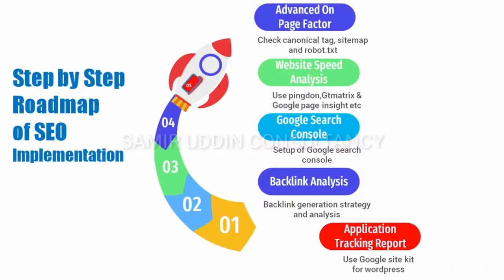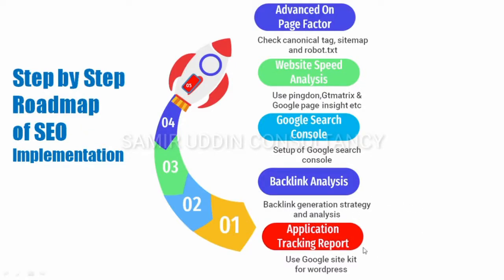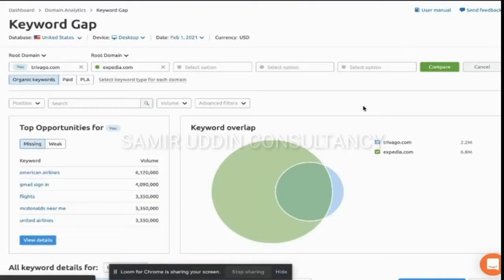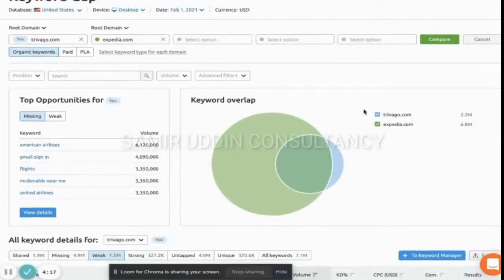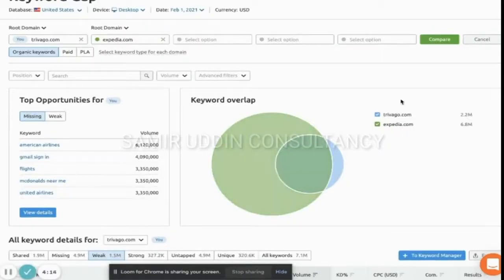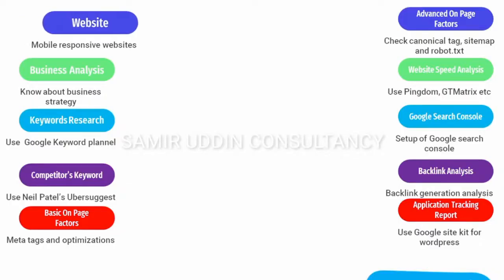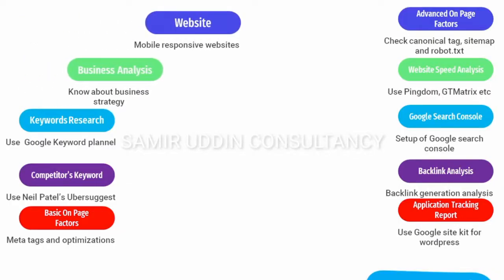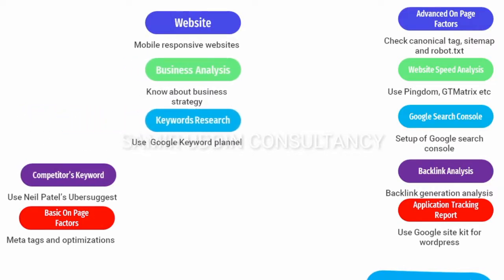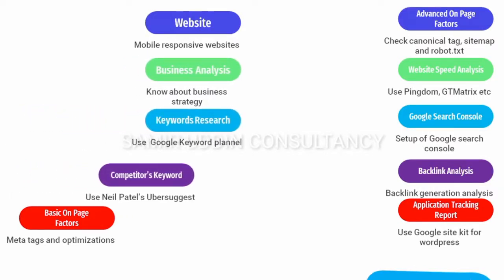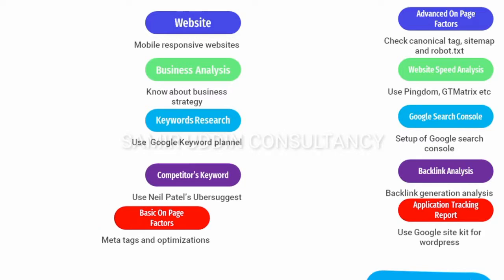After implementing all these steps, we need to track our search engine strategy through Google Search Console or ACRP. If you are using WordPress CMS, then you can use the Google Site Kit plugin for tracking your application. After tracking, you will find your keyword ranking and any mistakes as well.